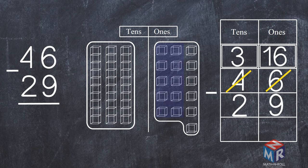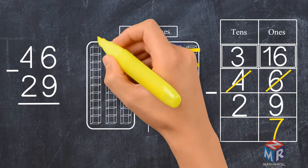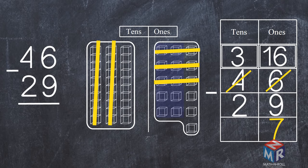Now we subtract the ones. 16 minus 9 is equal to 7. Now let's subtract the tens. 3 minus 2 is equal to 1, so 46 minus 29 is equal to 17.